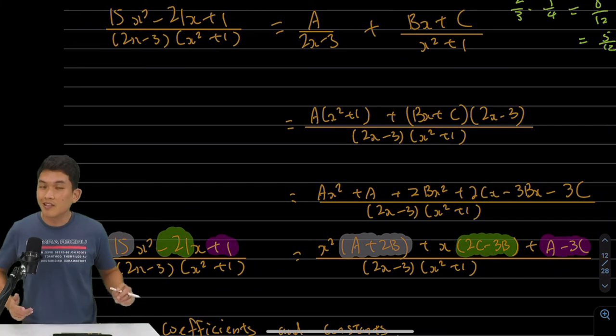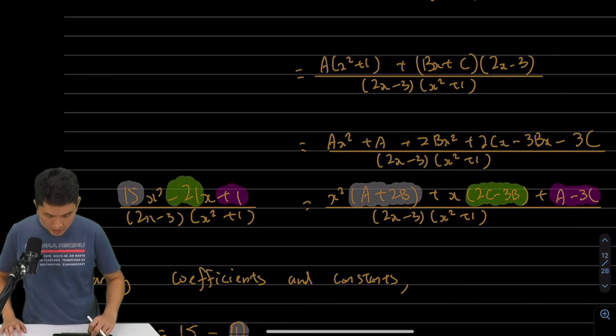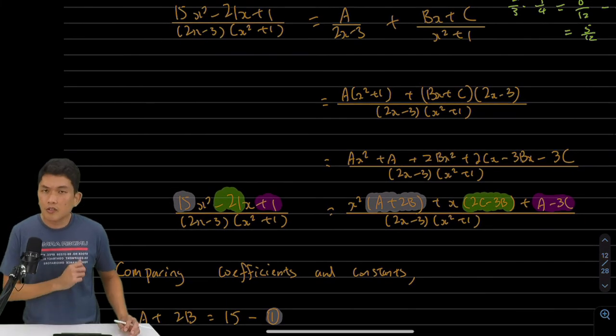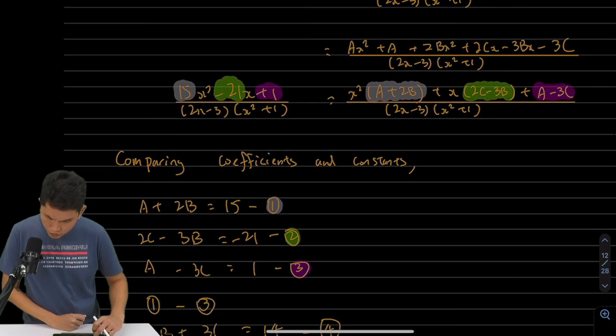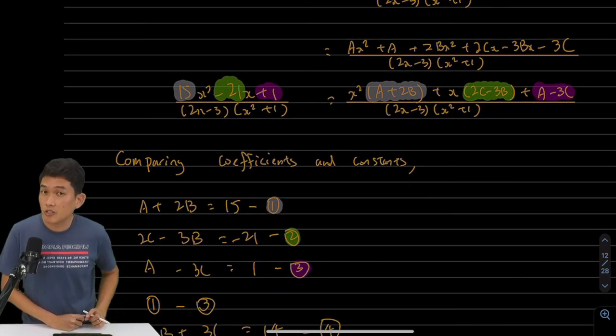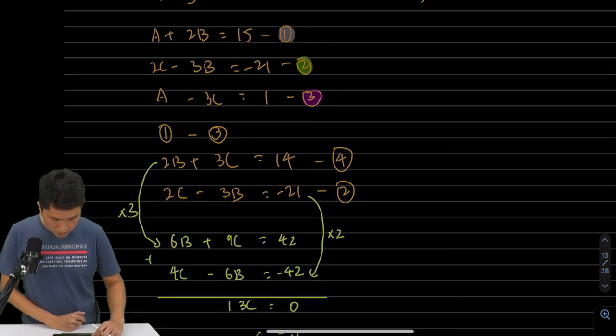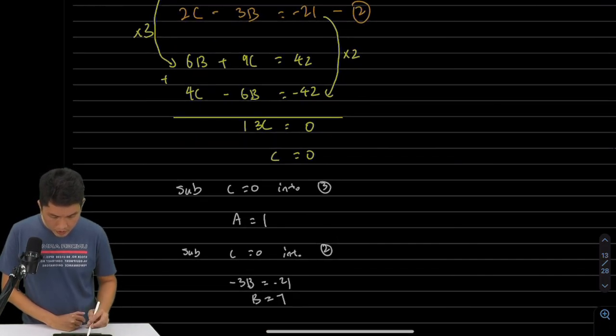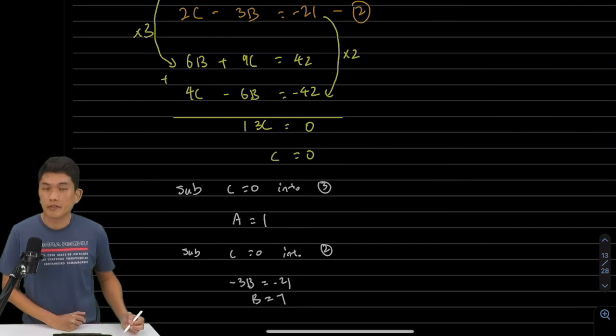That's where we can solve using simultaneous equations. So I'm going to skip ahead right here. You should be able to do simultaneous equations on your own. If not, your calculator can solve simultaneous equations too. So you should be able to get C equals to 0, A equals to 1, B equals to 7.